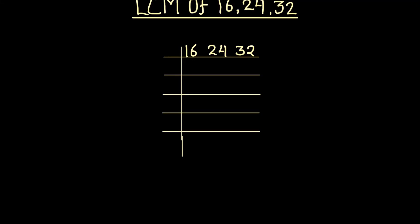Hello students. In this video we are going to learn how to find the LCM of 16, 24, and 32 using the prime factorization method. Prime factorization is a method in which we divide numbers and find their factors. Factors are numbers which divide any number fully without leaving a remainder. After finding the factors, we find the LCM of the numbers.